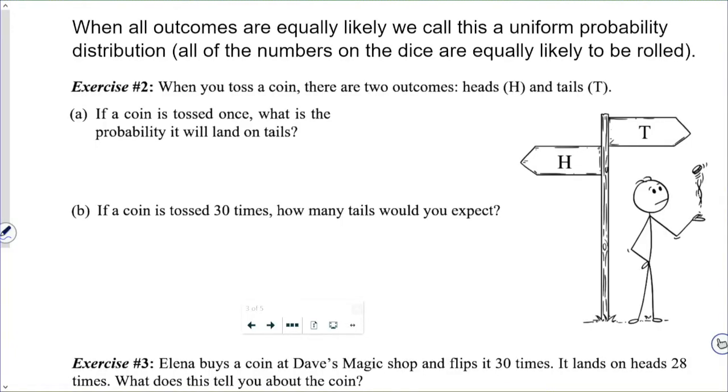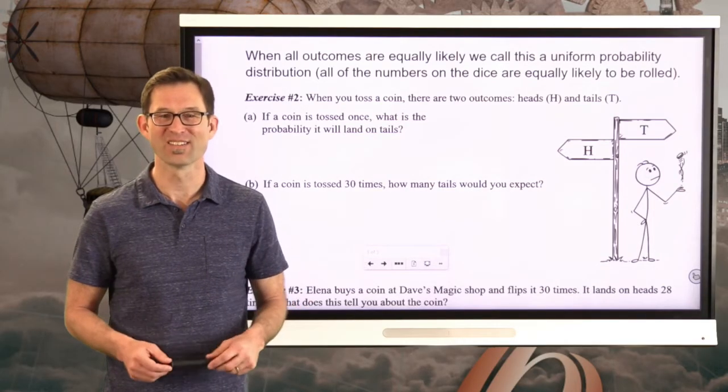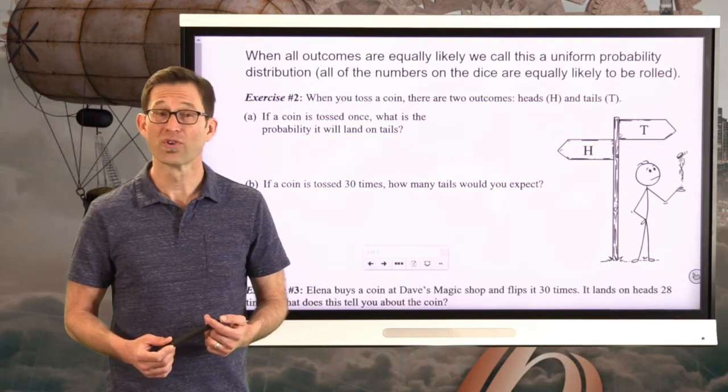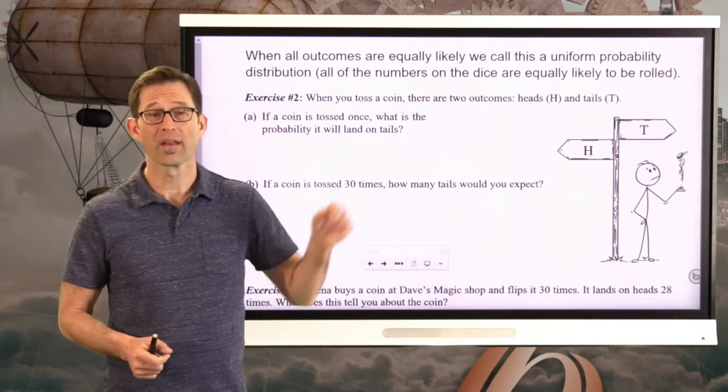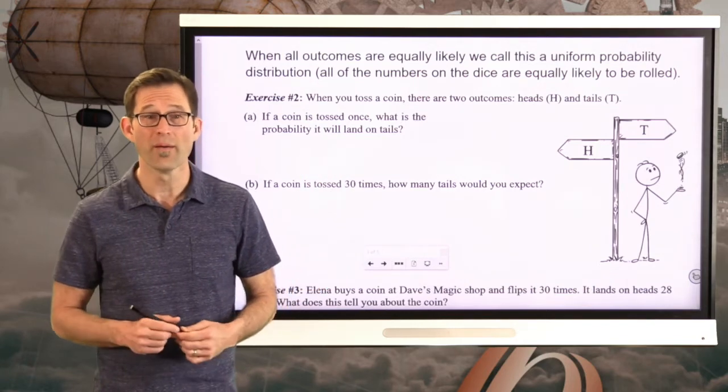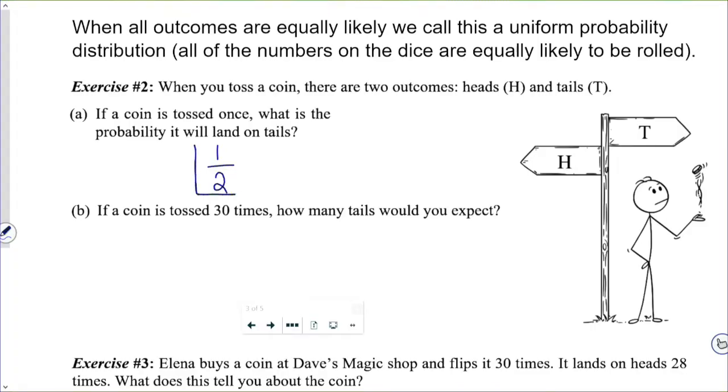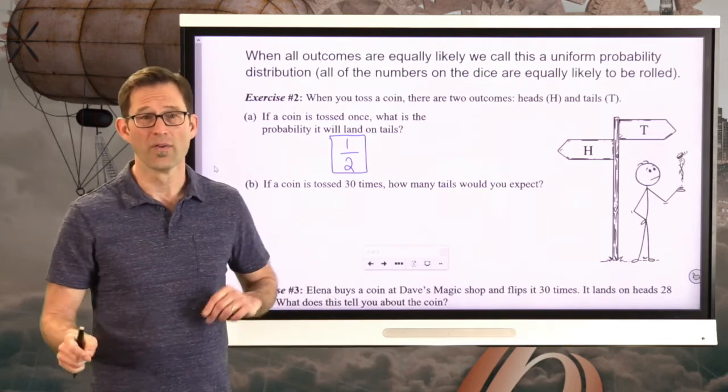When you toss a coin, there are two outcomes, heads H and tails T. Letter A: if a coin is tossed once, what is the probability it lands on tails? This should be pretty easy. Why don't you pause the video and see what you get? Well, there are a total of two equally likely outcomes, H and T. The probability will land on tails? Well, that counts as one of them, and therefore the probability is one-half. It might be the most common probability in all probability problems. What is the probability when you flip a coin, it lands on either heads or tails? Well, on either one of them, it's going to be one-half.